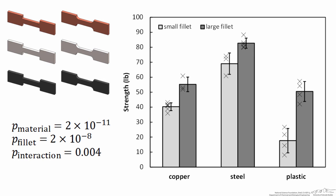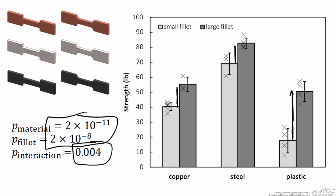Here's what that data set might look like. I see a very small value for both p-material and p-fillet, so the material made a difference and the presence of a fillet made a difference. However, now I also see a very small value for p-interaction. When I look at the difference between the small and large fillet for copper and steel, I see about the same value. However, when I look at the plastic, it looks like the fillet made a more significant difference — it was more beneficial for the plastic sample than for copper or steel. This is where the interaction comes into play, and if you see something like that, there might be something you don't understand experimentally, or some other reason the large fillet improved the plastic sample's strength more.